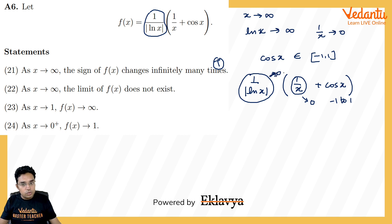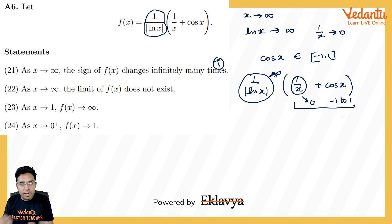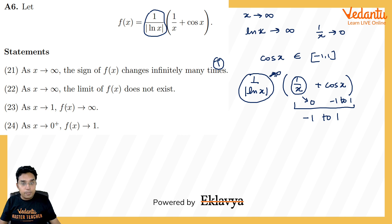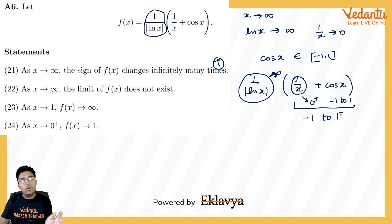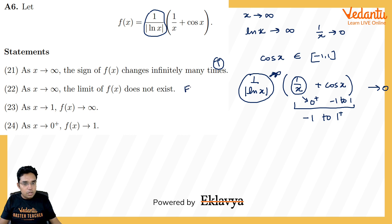Part 22: the limit of f(x) as x → ∞ does not exist — this is false. The outside factor 1/|ln x| → 0, and the bracket (1/x + cos x) stays within a finite interval roughly [-1,1]. So finite times approaching-zero equals zero, meaning the limit is 0. Saying the limit does not exist is false.